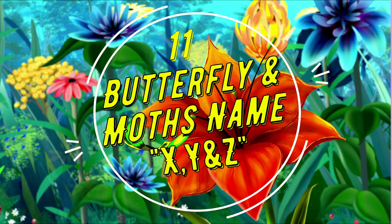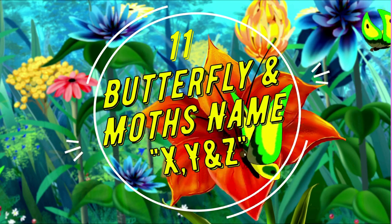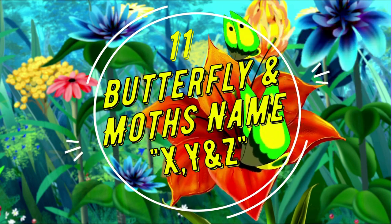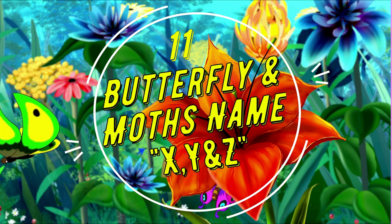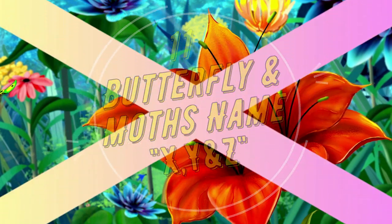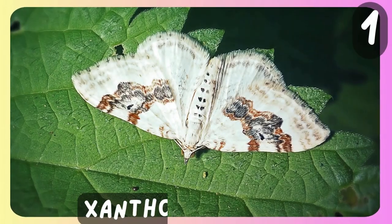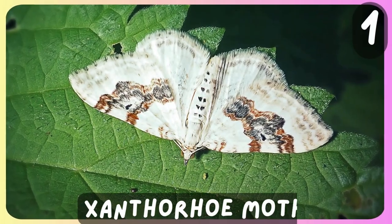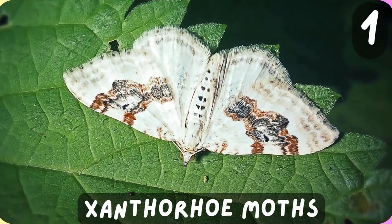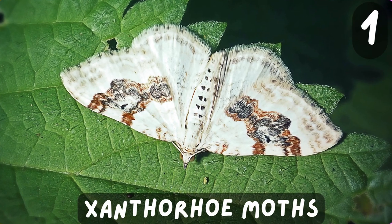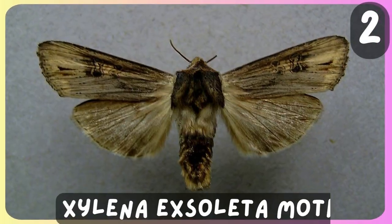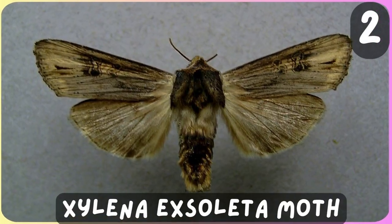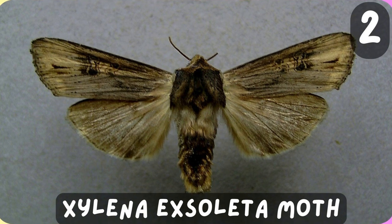11 Butterfly and Moth's names that start with the letters X, Y and Z. Xanthorho Moth. Xylena Exolator Moth.